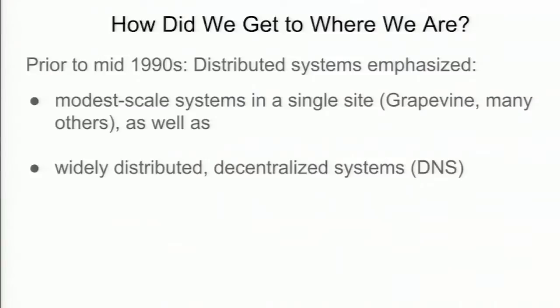Prior to the 90s, as Ken discussed, distributed systems tended to emphasize relatively small-scale systems — three to five replicas of things, a modest-scale system in a local area network, or widely distributed but decentralized systems. They didn't tend to focus on having a huge number of computers in one place and doing stuff with them.